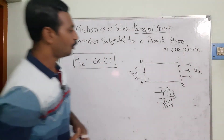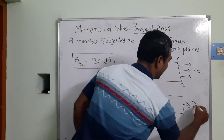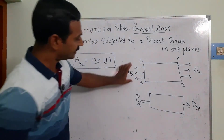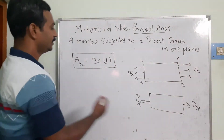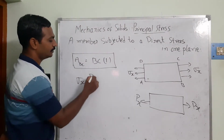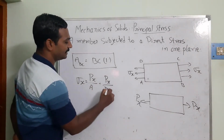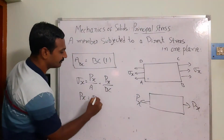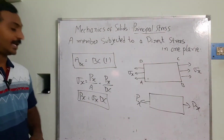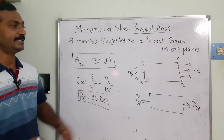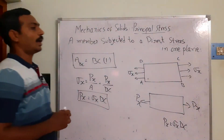Now I want to determine what is PX — the load acting in the same direction. We know that Sigma X equals stress, which equals load divided by area. So Sigma X equals PX divided by BC, and therefore PX equals Sigma X multiplied by BC. So the load acting in the x-direction: PX = Sigma X × BC.